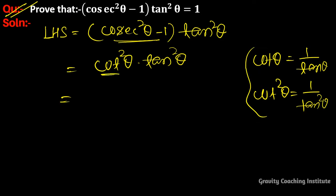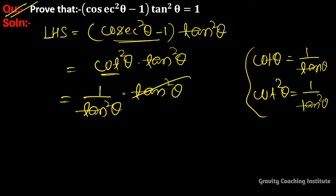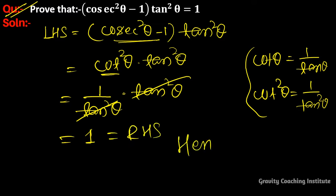So here we write cot square theta as 1 upon tan square theta, into tan square theta. The tan square theta cancels, and we get equal to 1, which equals RHS. Hence proved.